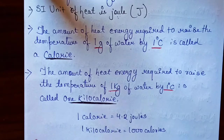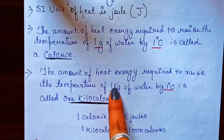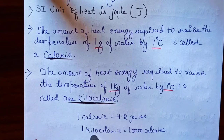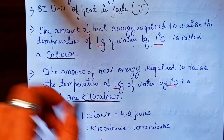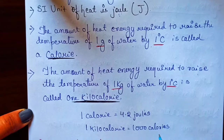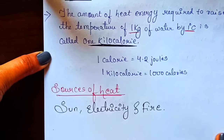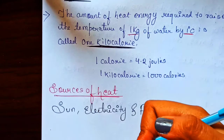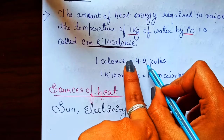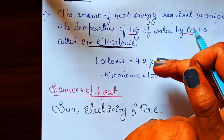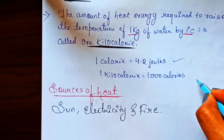Kilocalorie is the amount of heat energy required to raise the temperature of 1 kg of water by 1 degree Celsius — same as calorie but 1 kg instead of 1 gram. The relationship is: 1 kilocalorie equals 1000 calories, just as 1 kg equals 1000 grams. Also, since the SI unit of heat is Joule, 1 calorie is equal to 4.2 Joules (some books write 4.186 J, which is also acceptable).